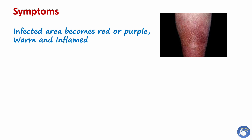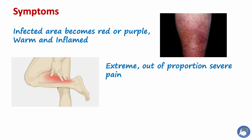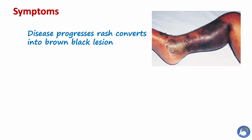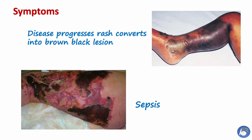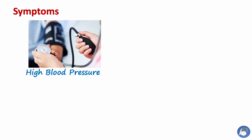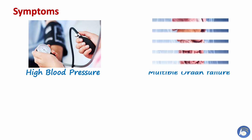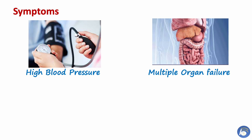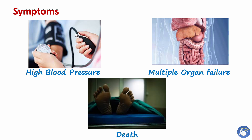Symptoms include the infected area becoming red or purple, warm and inflamed, with extreme out-of-proportion severe pain and fever. As the disease progresses, the rash converts into brown-black lesions. Bacteria go into the bloodstream and cause sepsis. Bacteria also release toxins into the blood causing toxic shock syndrome, in which blood pressure shoots up with higher chances of multiple organ failure and ultimately death.